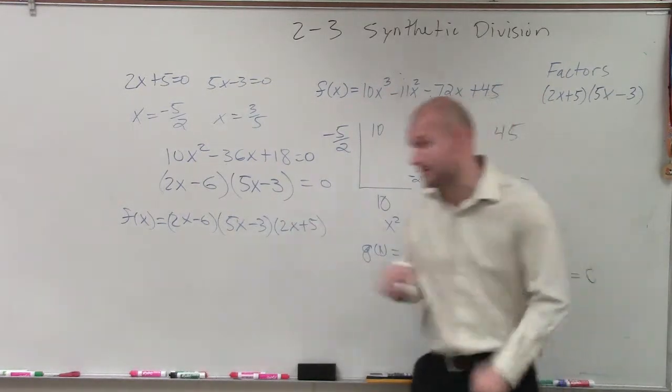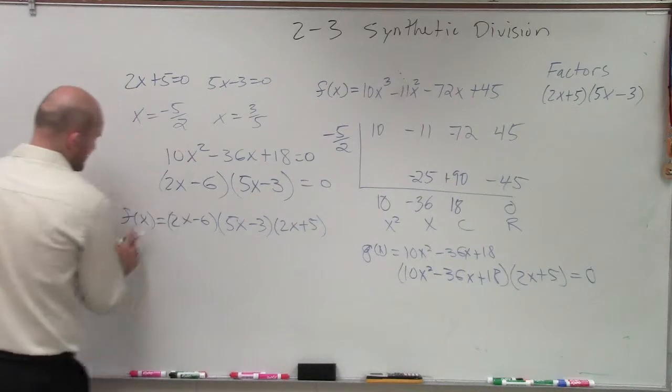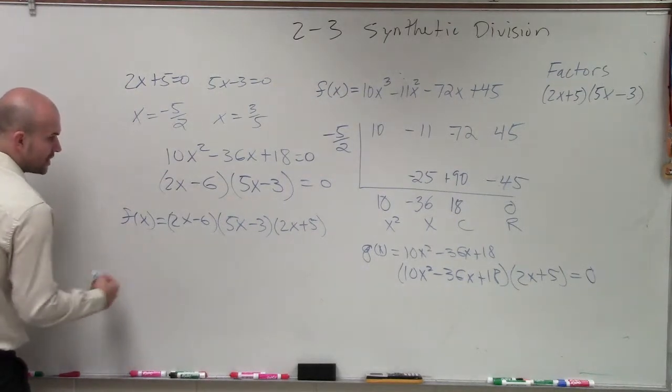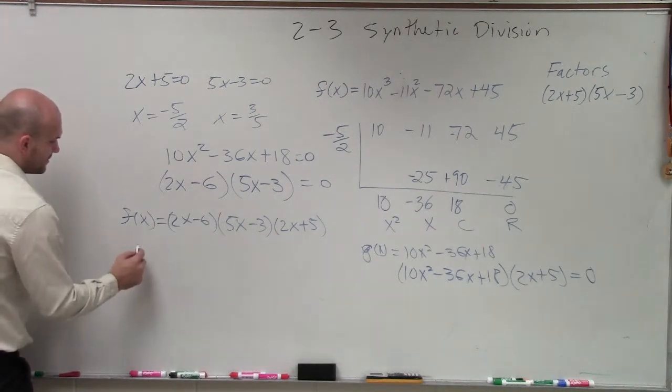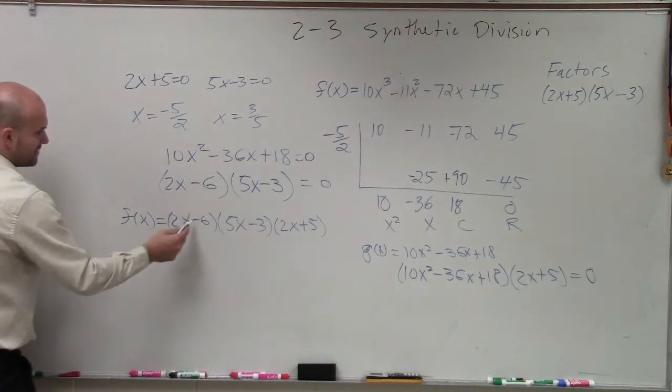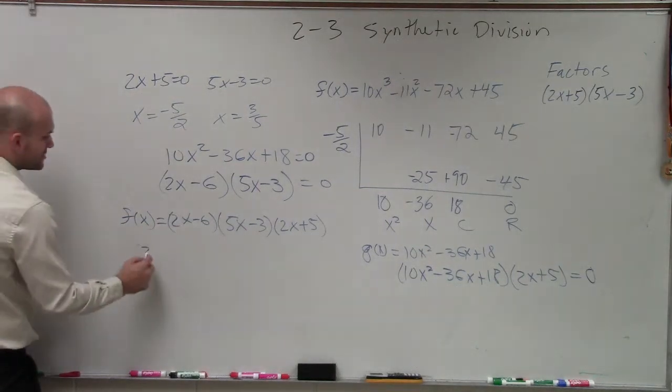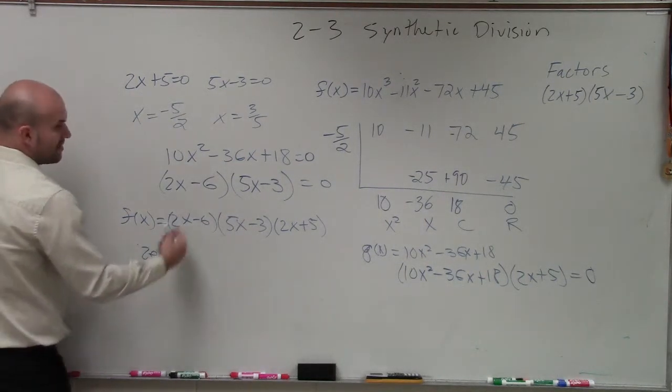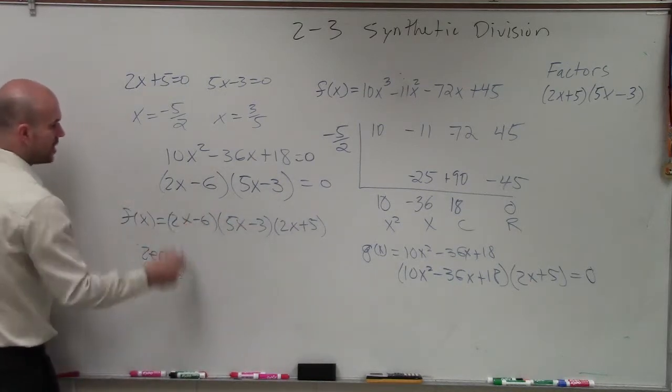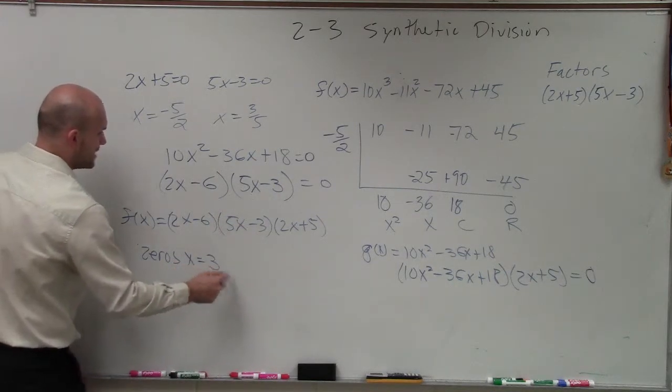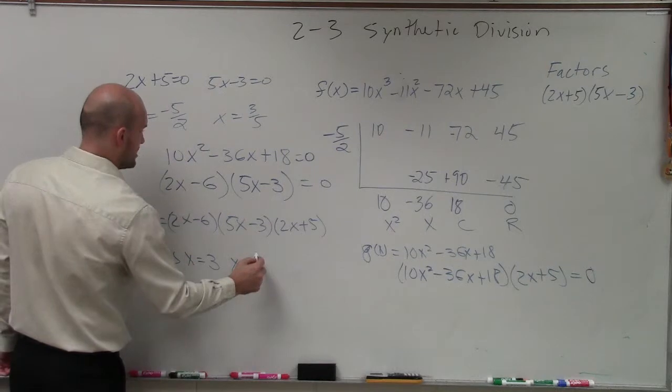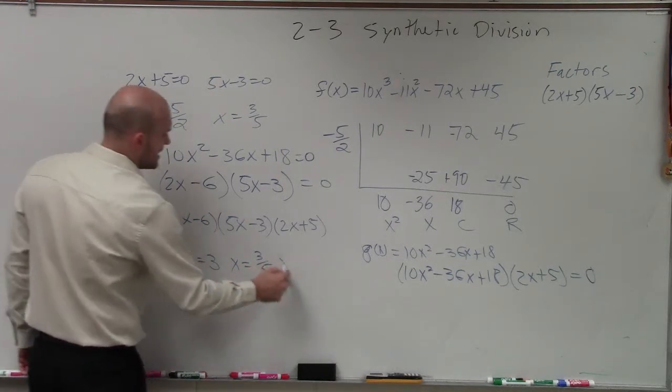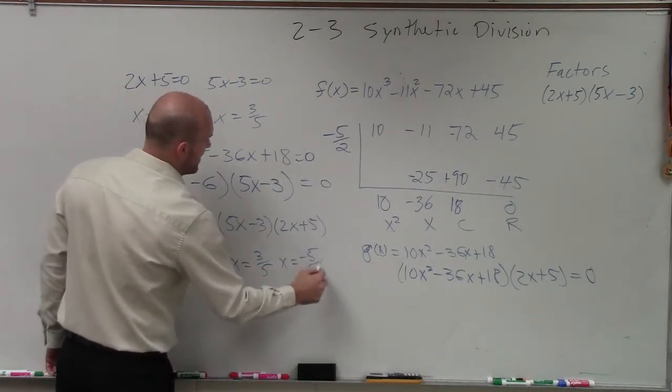Now, I can find all the zeros. To find all the zeros, I just set it equal to zero. And then I set each one equal to zero, which we already did for those two. But then for this one, it would be 6 divided by 2. So therefore, my zeros are x equals 3, x equals 3 fifths, and x equals negative 5 halves.